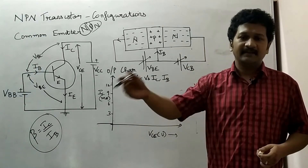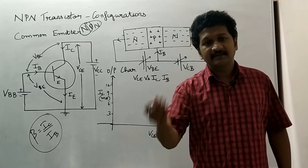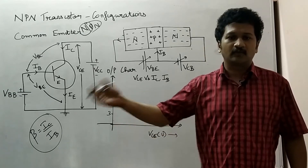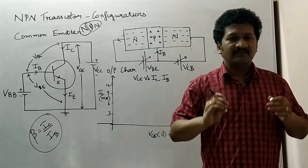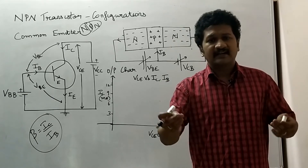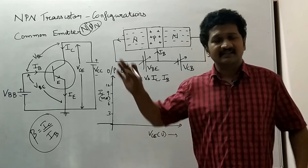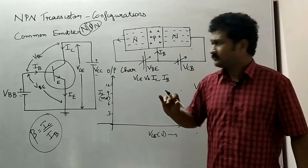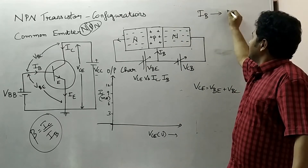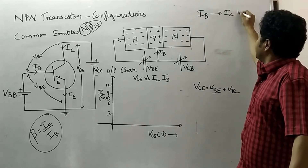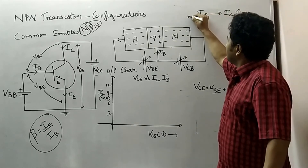As I already said in previous videos, BJT is a current control device. IB is the input current and IC is the output current. We have to see how much current is amplified — for example, if IB is the input current in microamps, it will be amplified as output current IC in milliamps.